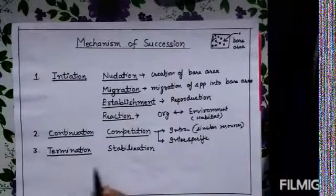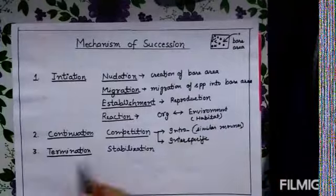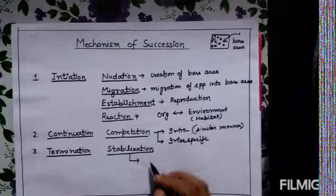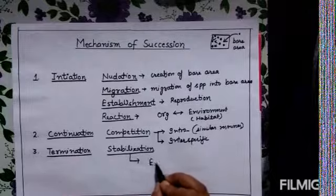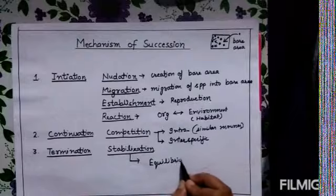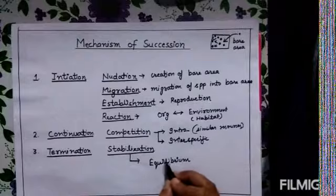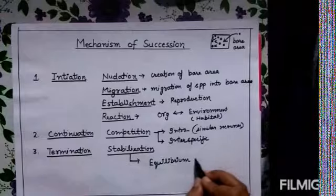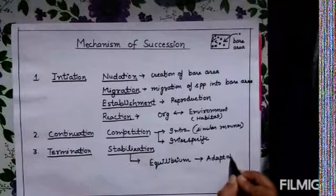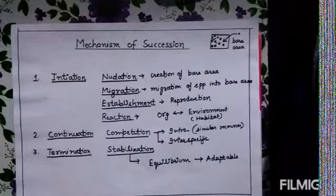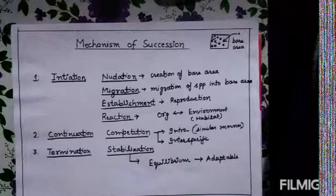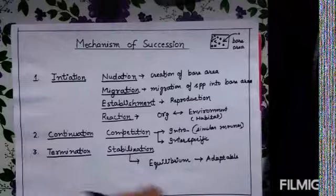The final step is termination, where we have stabilization. Stabilization is generally when the organism creates an equilibrium-like condition with the habitat. We can say the most adaptable organism is now present for a good time in a particular habitat. These are the various different phases of succession: initiation, continuation, and termination.